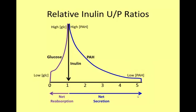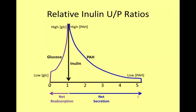As the concentration of PAH in the systemic bloodstream increases, the U to P ratio drops closer to 1. The U to P ratios can be used to determine whether a substance undergoes net reabsorption or secretion in the nephron.